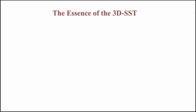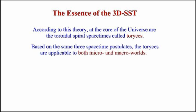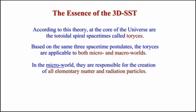The essence of the 3DSST. According to this theory, at the core of the universe are the toroidal spiral spacetimes, called toreses. Based on the same three spacetime postulates, the toreses are applicable to both micro and macro worlds. In the micro world, they are responsible for the creation of all elementary matter and radiation particles.